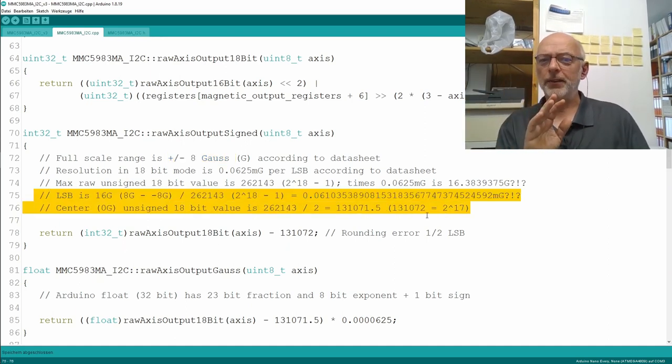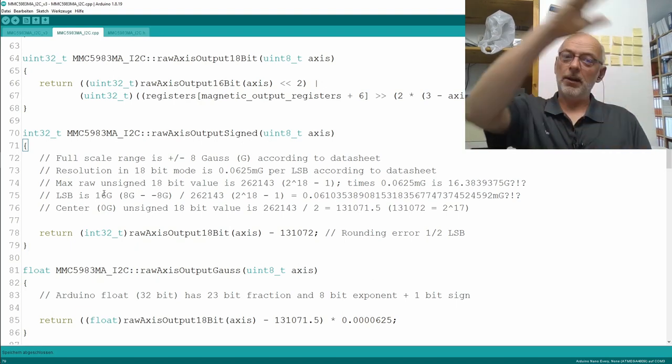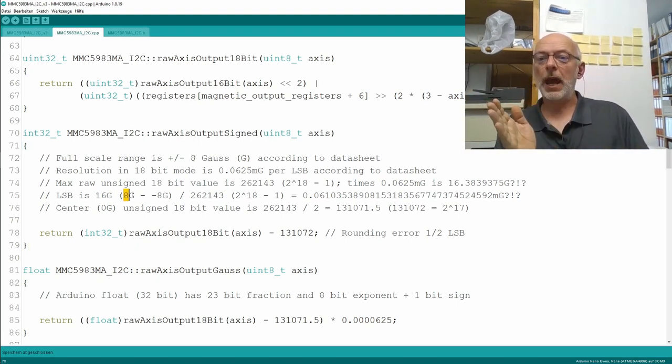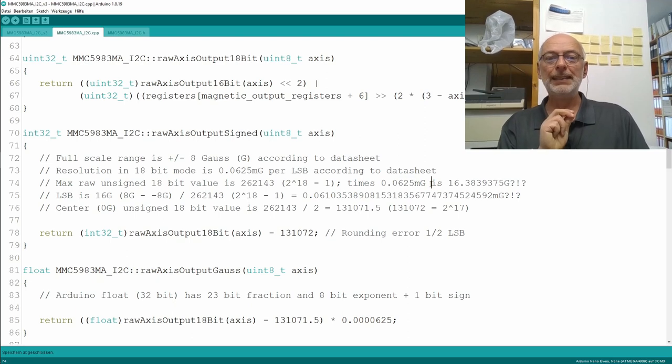Our LSB, if we calculate it the other way around, is 16 Gauss divided by our 18-bit range, the 2 to the power of 18 minus 1, so 262,143. And that gives us a value of 0.061 and then something mGauss. Not, as stated in the data sheet, 0.0625 mGauss. So, what is true? The plus minus 8 Gauss range or the 0.0625 mGauss resolution per LSB? Well, we will have to pick one later on.